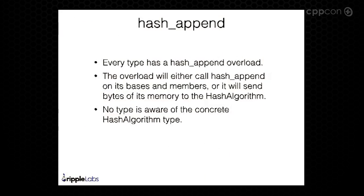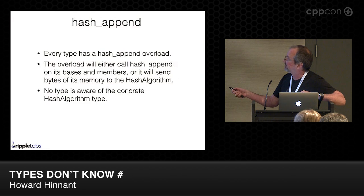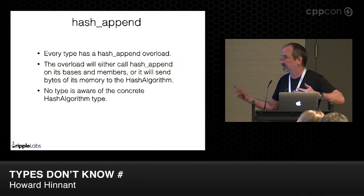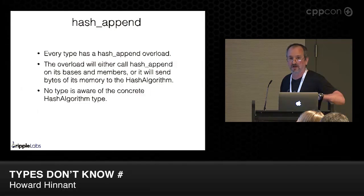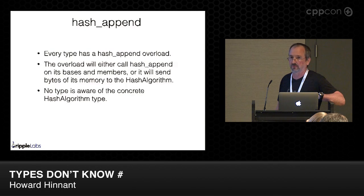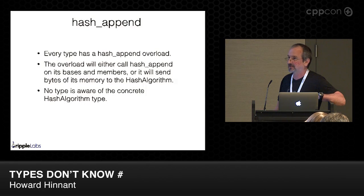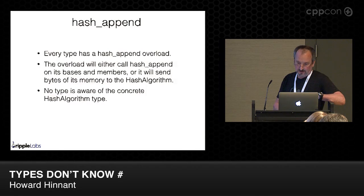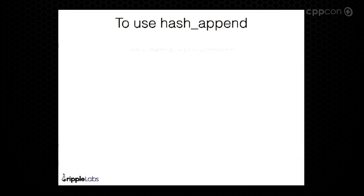In general, for this technique, every single type that you might want to hash or participate in a hash computation has to have a hash_append overload. That overload will either call hash_append on all its bases and members, or send the bytes of its memory straight to the hash algorithm. And no type at all is aware of any concrete hashing algorithm — that's key, because you want to be able to switch from one hashing algorithm to another.